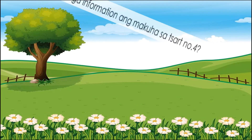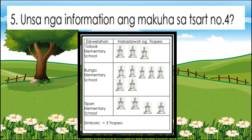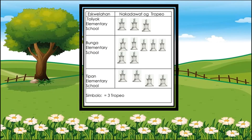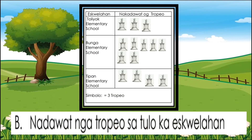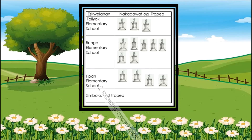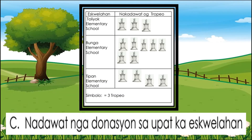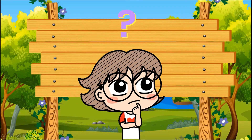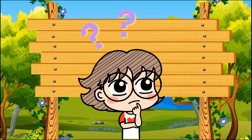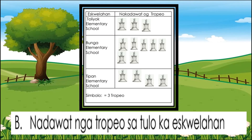Unsa nga information ang makuha sa chart number 4? A. Nadawat nga donasyon sa tulo ka eskwelahan. B. Nadawat nga tropeyo sa tulo ka eskwelahan. C. Nadawat nga donasyon sa upat ka eskwelahan. O D. Nadawat nga tropeyo sa upat ka eskwelahan. Maayo, letrang B ang tubag.